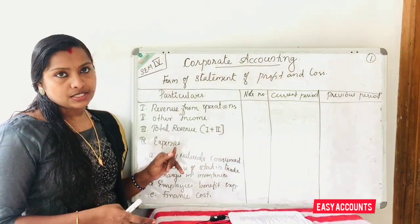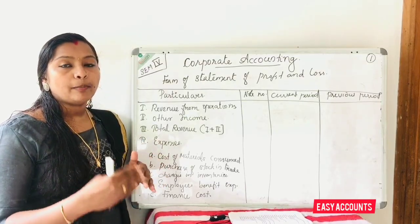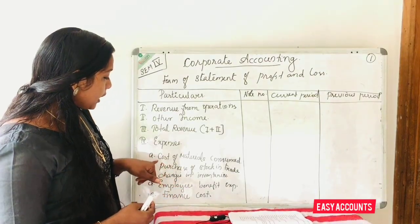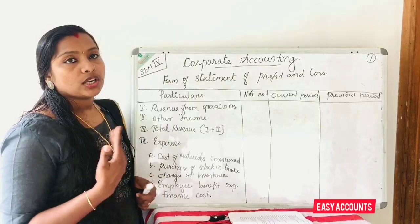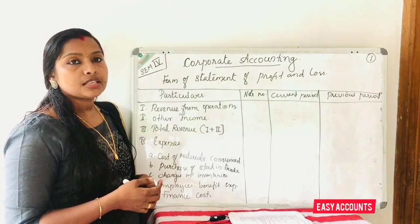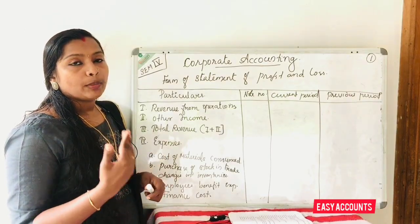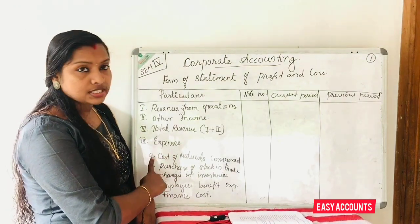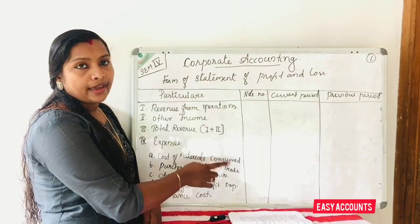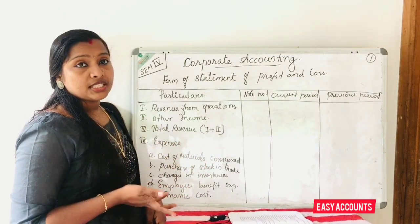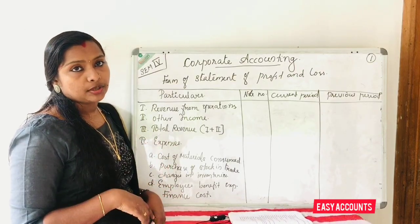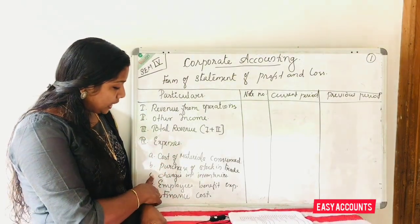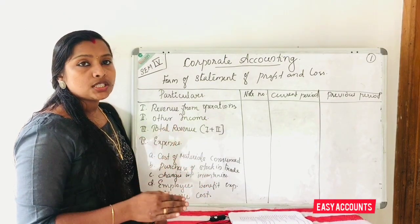Below total revenue, we list expenses. The first expense item is cost of material consumed — we use raw materials in business, so the cost of those raw materials is an expense. The second item is purchases of stock-in-trade. The third item is changes in inventories, which covers opening stock and closing stock.